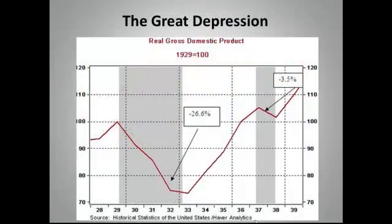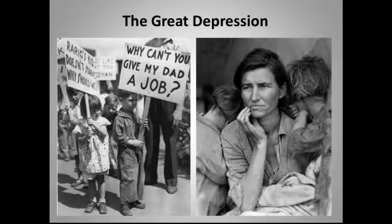Now we move back in time to the Great Depression and the birth of macroeconomics. This graph should give you a sense of why the Great Depression spurred a whole new branch of economics. GDP dropped almost 27 percent between 1929 and 1933, then dropped again in 1937. In mid-1938, total GDP was not much larger than GDP in 1929. Yes, the stock market crash of October 1929 pretty clearly set the whole mess off, but this begs the question of why stocks crashed.